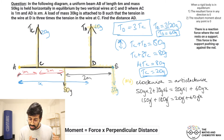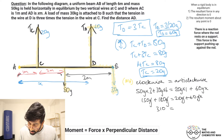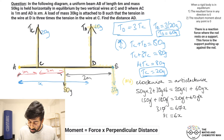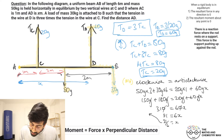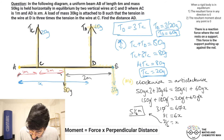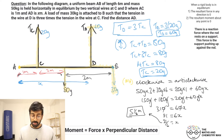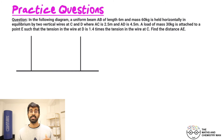Dividing both sides by 10: 31 = 6x, so x = 31/6, which as a mixed number is five and a sixth meters. That's our distance AD — five and a sixth meters. It seems reasonable, since it's just before the end of the rod which is six meters.